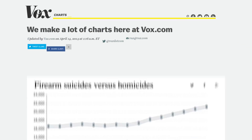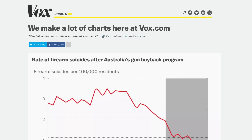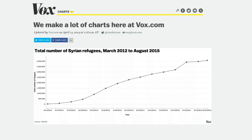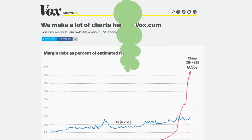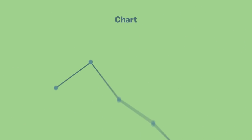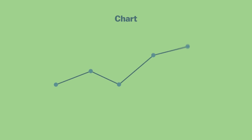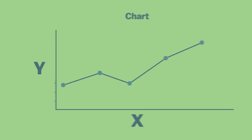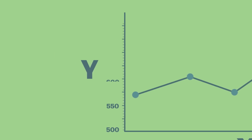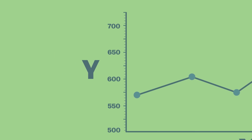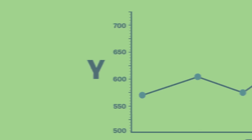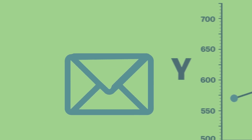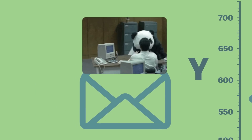We make a lot of charts at Vox.com, and of course charts have axes. And pretty much every time we run a chart with a y-axis that starts anywhere other than zero, someone winds up emailing to complain.